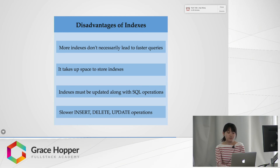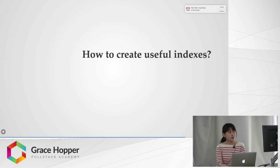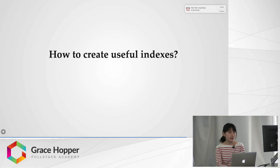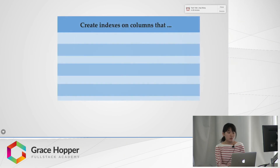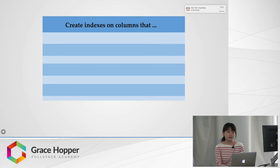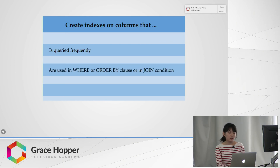So you must weigh the performance benefit of indexes for queries against the performance overhead of updates. For example, if a table is primarily read-only, you might use more indexes; but if a table is heavily updated, you might use fewer indexes. The real question is how to create appropriate and useful indexes — which columns should you index? You should estimate the frequency and importance of each query and select the most frequently queried columns. Also consider creating indexes on columns used in WHERE, ORDER BY, or GROUP BY clauses. For join conditions, it's ideal to create an index on a foreign key, as it optimizes performance when accessing and enforcing referential constraints.